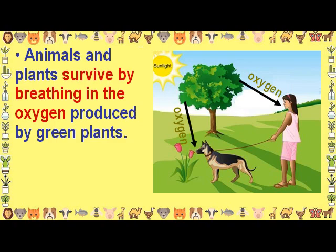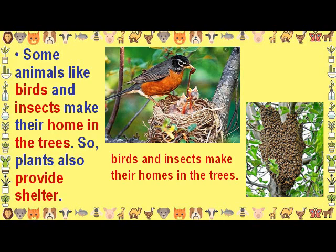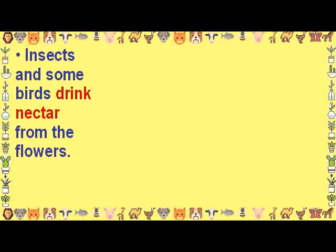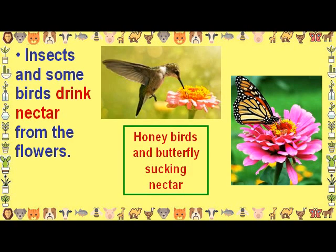Some animals like birds and insects make their homes in trees, so plants also provide shelter. Insects and some birds drink nectar from flowers — for example, honey birds and butterflies sucking nectar.